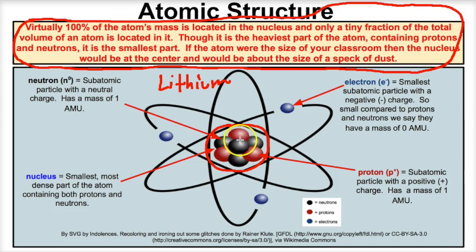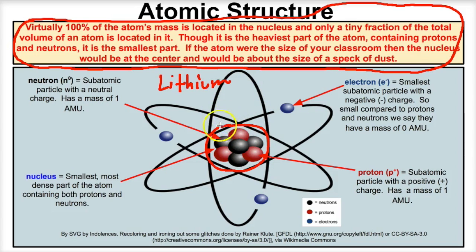At the center of every atom is a very small, extremely dense object called the nucleus. If this atom were the size of your classroom, then the nucleus at the center would only be about a speck of dust or a grain of sand. That's because the nucleus of every atom is the smallest, most dense part of the atom.